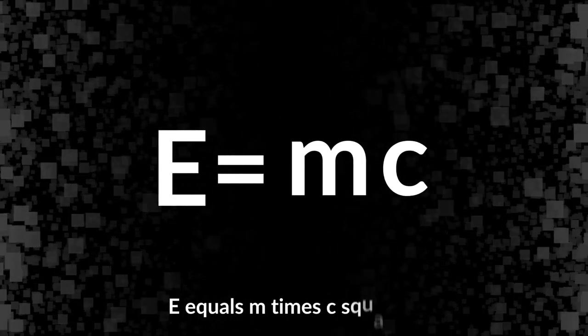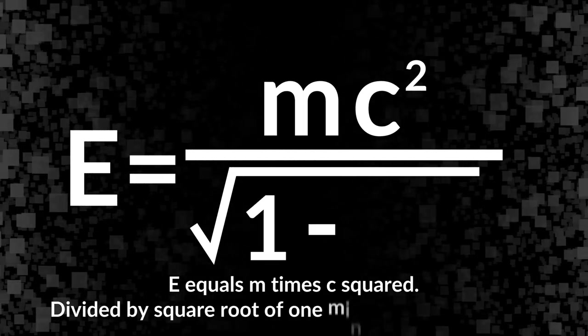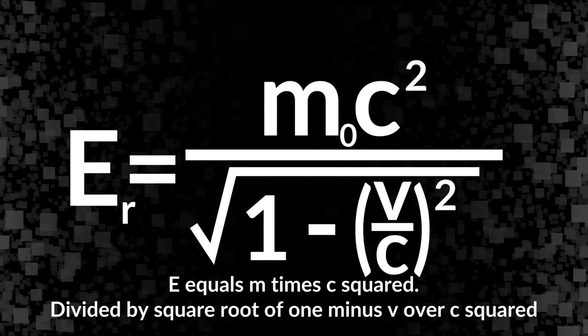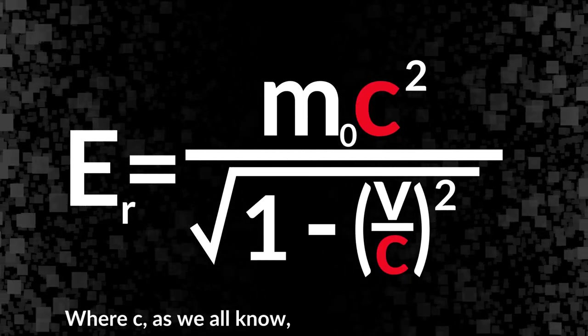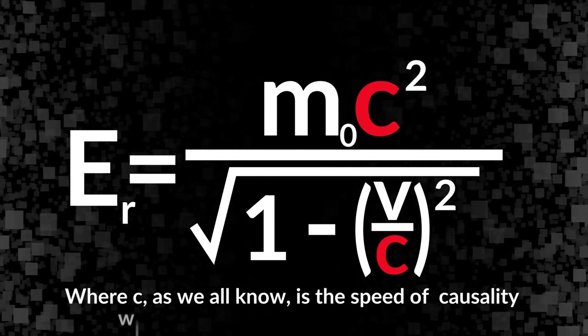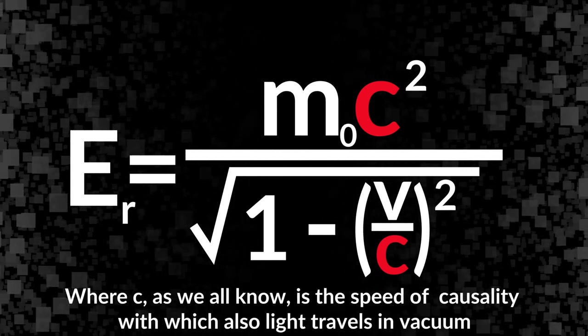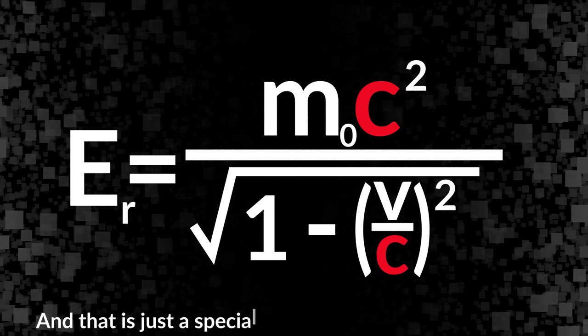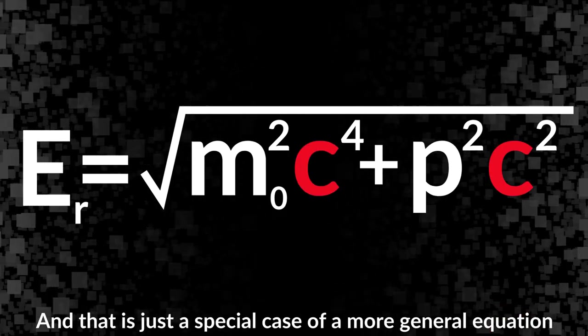E equals m times c squared divided by square root of 1 minus v over c squared, where c as we all know is the speed of causality with which also light travels in vacuum. And that is just a special case of a more general equation, but that equation is not important for this video.